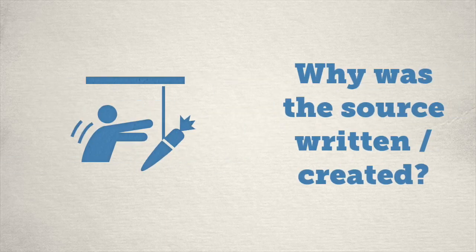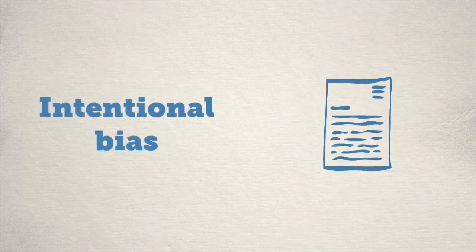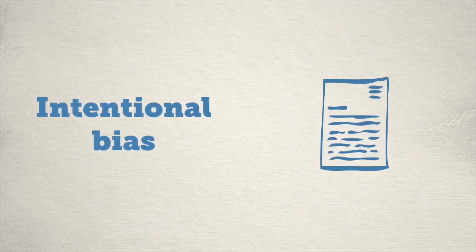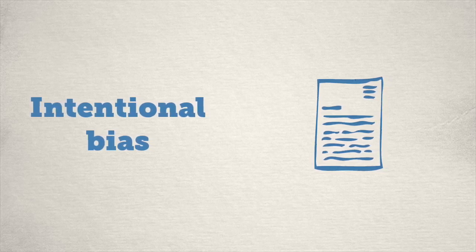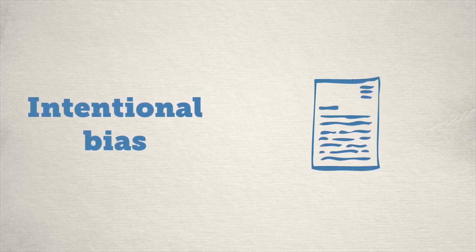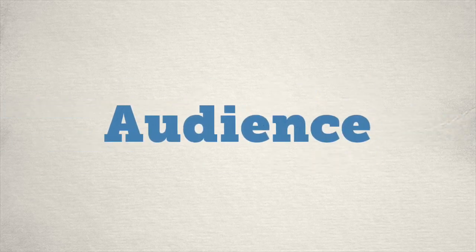Motive. Or why was the source written or created? One thing to look for here is intentional bias. For example, if a source is a letter to the editor on a contentious issue, well then there's a very good chance that the person is trying to persuade someone of something.